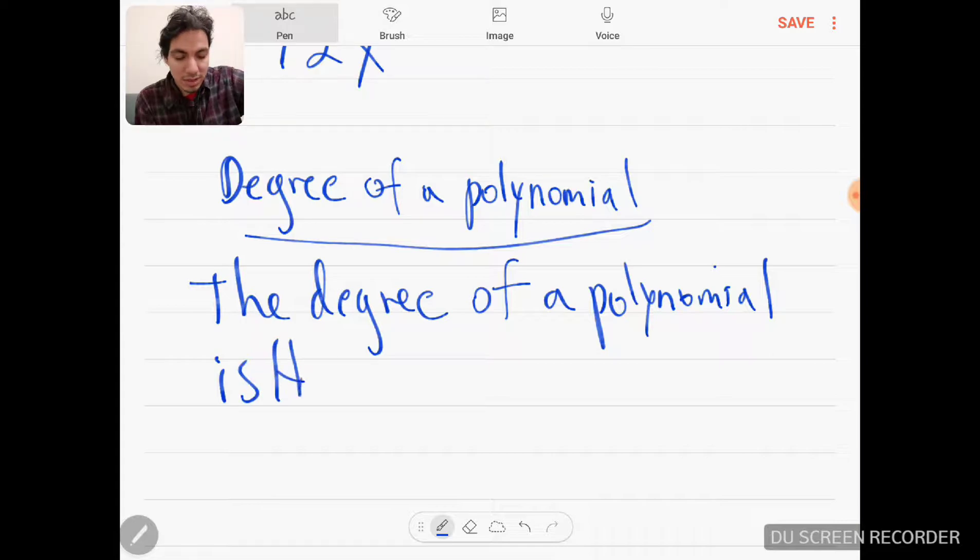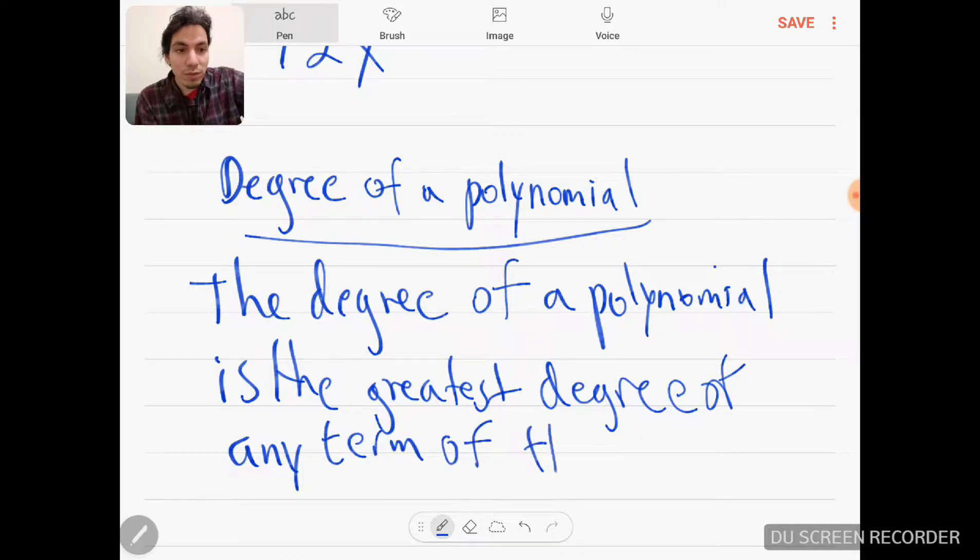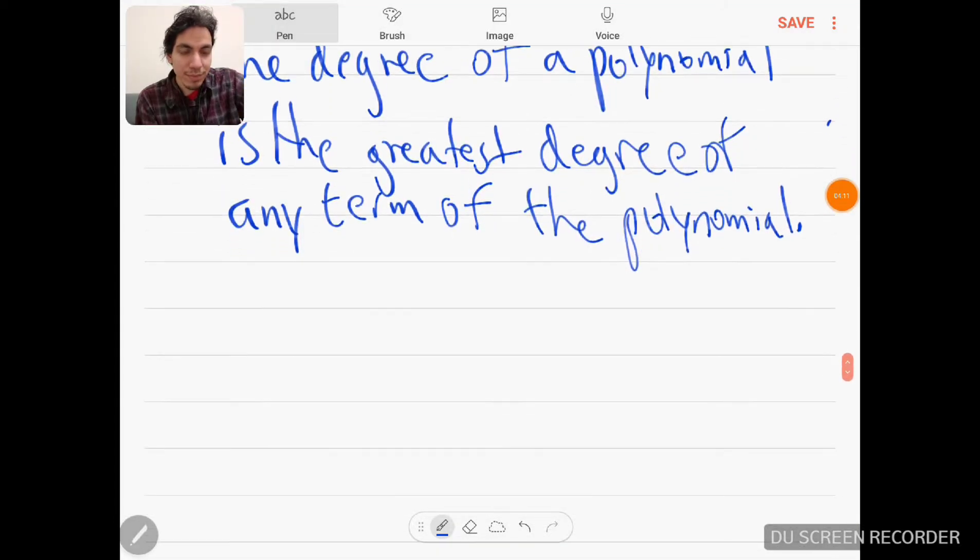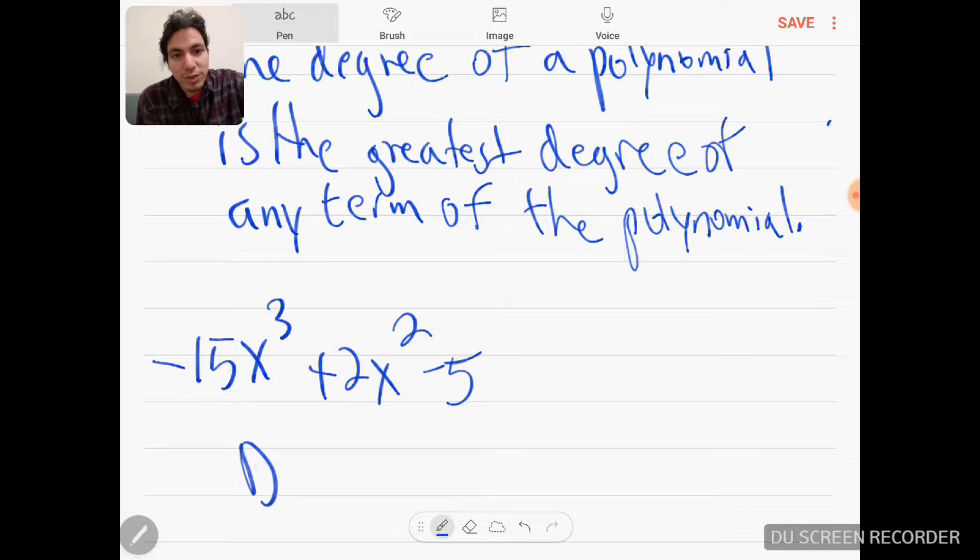So for example, if I gave you -15x^3 + 2x^2 - 5, the degree for this would be what? 3, because 3 is the biggest one out of all the examples.